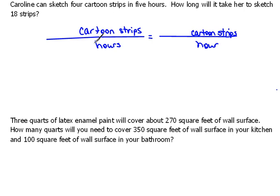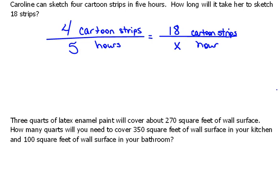Now that we know how we're setting it up, let's fill in our numbers. It says she can do four cartoon strips in five hours, so our first rate would be four cartoon strips compared to five hours. We want to figure out how long it will take her to sketch 18 strips. We know she's doing 18 strips, but the number of hours is what we don't know — that's our unknown.